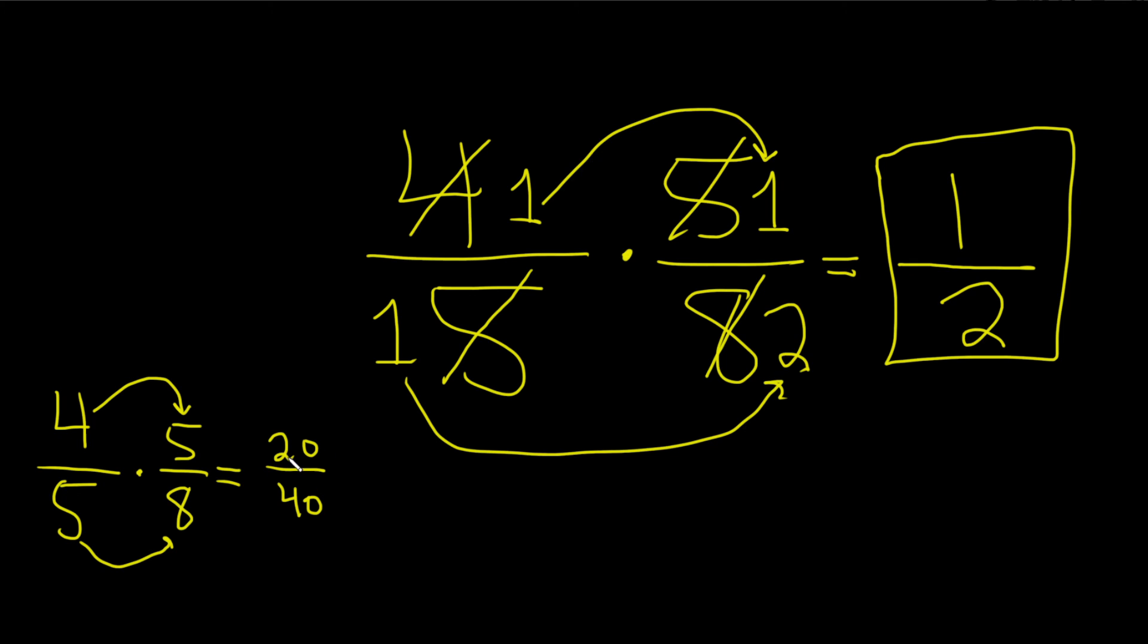Because now you can say, okay, 20 goes into 20 one time. So you cross out the 20 and you put a 1. 20 goes into 40 two times, cross out the 40, put a 2. So this is equal to 1 over 2.